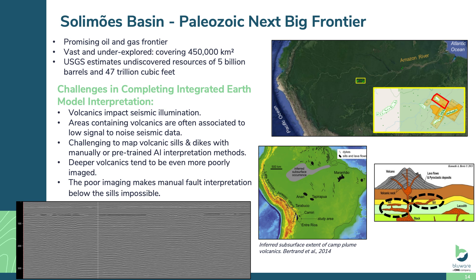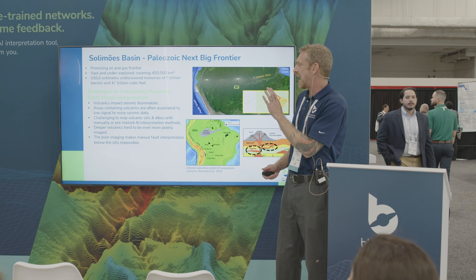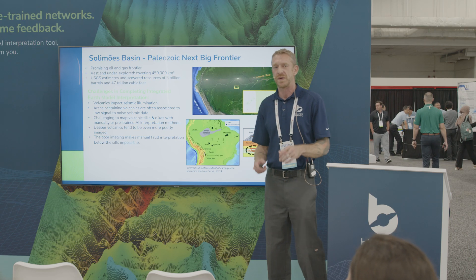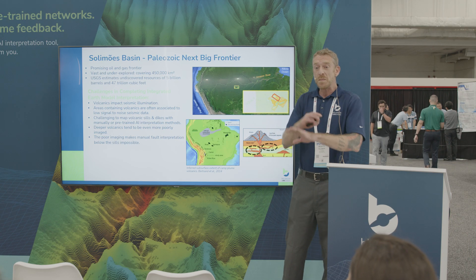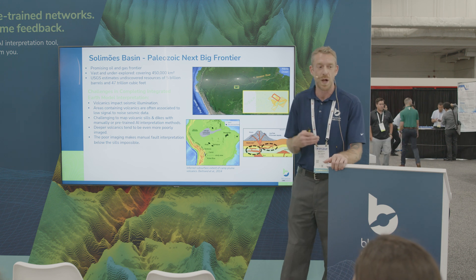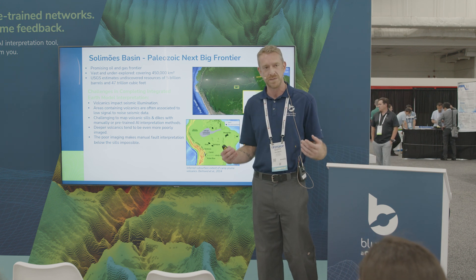This case study is from the Solemois Basin in Brazil, right in the middle of Brazil, and this thing is huge — almost a half million square kilometers in size, with five billion barrels of undiscovered oil and 47 trillion cubic feet of natural gas. This is a massive basin, and it qualifies as what we call a super basin.